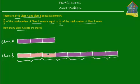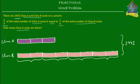Let's fill in another color for Class B seats. So these are your Class B seats. What we also know is that Class A and Class B together total 2,442 seats. We have 3 purple units representing Class A seats and 8 pink units representing Class B seats, and these 3 plus 8 together are 2,442.